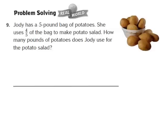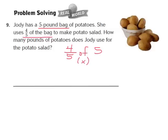Now let's take a look at question number 9 — one of our real-world problem-solving questions. It says: Jodi has a 5-pound bag of potatoes. She uses 4 fifths of the bag to make potato salad. How many pounds of potatoes does Jodi use for the potato salad? Our problem becomes 4 fifths of 5. Remember, that little word 'of' just represents multiplication.